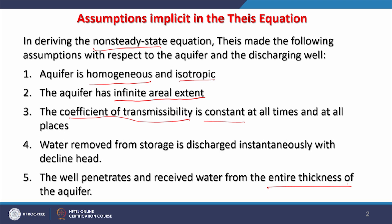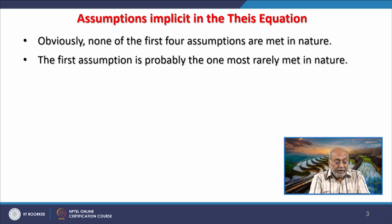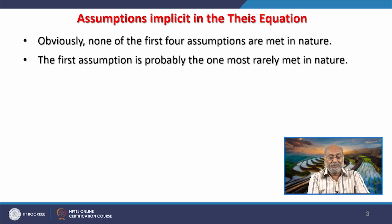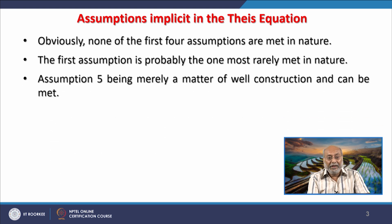None of the first four assumptions are met in nature. The first four are: homogeneous, isotropic, infinite extent, constant coefficient of transmissibility, and water removed from storage is discharged instantaneously with decline in head. The first assumption — homogeneous and isotropic — is probably the one most rarely met in nature, as we cannot see the formations and therefore assuming this is the limitation.